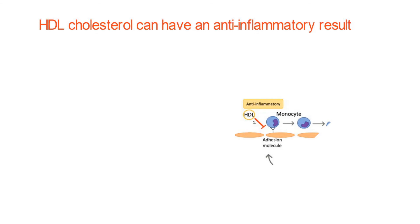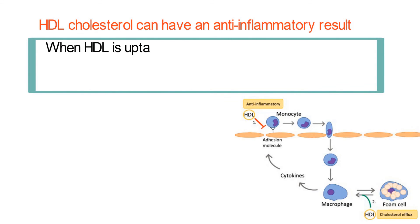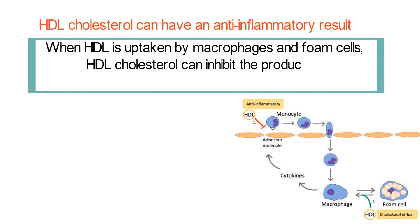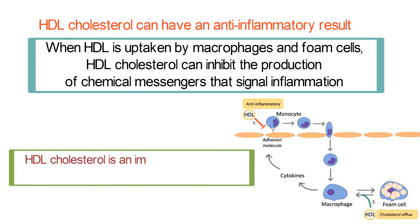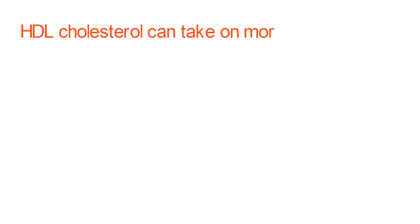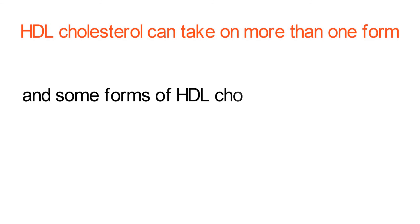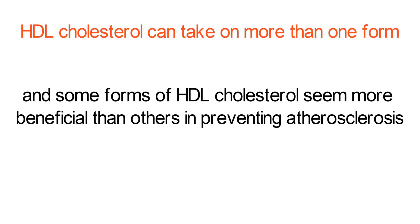Lastly, HDL cholesterol can have an anti-inflammatory effect when encountering macrophages and foam cells. When HDL is taken up by macrophages and foam cells, HDL cholesterol can inhibit the production of chemical messengers that signal inflammation, and HDL cholesterol can weaken the ability of the endothelium to transport cells involved in inflammation into the site of the atherosclerotic lesion. Thus, HDL cholesterol is an important tool in both prevention and treatment of atherosclerosis. It is important to point out, however, that HDL cholesterol can take on more than one form, and some forms of HDL cholesterol seem more beneficial than others in preventing atherosclerosis.